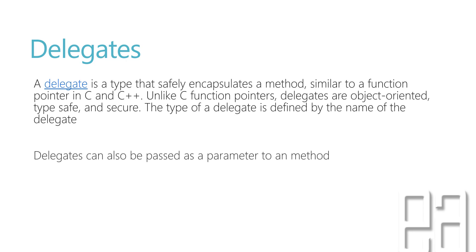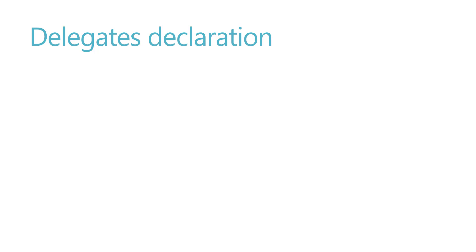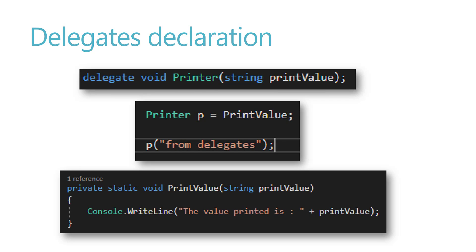When you create or declare a delegate, you can call it using its name — what's called a named instance of the delegate. There is something called passing a delegate as a parameter to another method, which we can use as well. The delegate is like a method, but you can use that delegate type to be passed as a parameter to another method. Our scope will be basic rather than advanced topics like multicast delegates. The delegate declaration in C# has a delegate keyword, a return type, and a name — for example, 'printer' — accepting a string parameter 'printValue'.